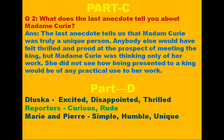Next is the D part. In the D part, there are three adjectives to describe characters. Daluska is excited, disappointed, and thrilled. Reporters are curious and rude. Mary and Pierre — these two are simple, humble, unique, and intelligent.